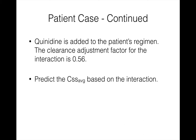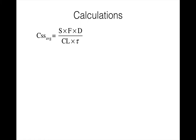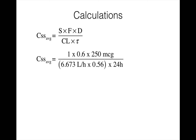Let's go back and do the calculations to predict the impact of adding quinidine on CSS average. Using the steady state concentration formula again with F of 0.6 and dose of 250 micrograms, we alter the clearance by multiplying it by the clearance adjustment factor of 0.56. When we do the calculations, the CSS average has now increased to 1.67 micrograms per liter.